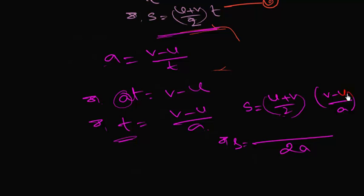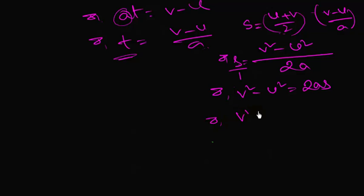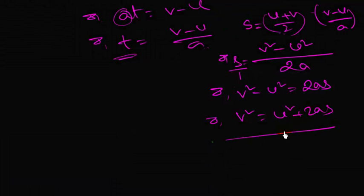2a. a plus b into minus b. S squared minus u squared, which equals 2as. This is the one that is RR: 2 squared minus u squared equals 2as. That's right. So on this way we need to work: v squared minus u squared equals 2as. That's right.